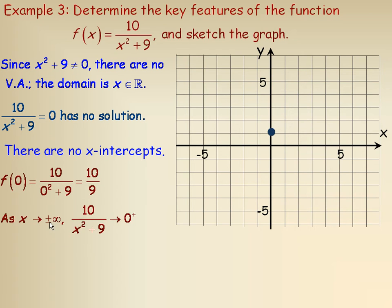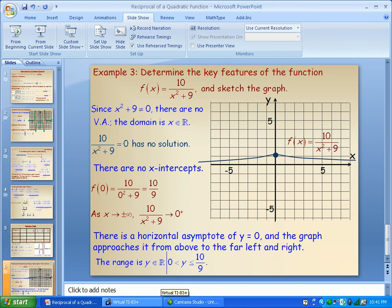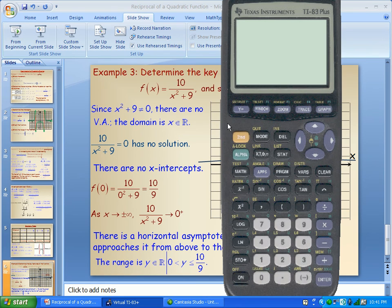Now as x approaches a large positive or a large negative, the value of 10 over x squared plus 9 tends towards zero from the positive side. And just to illustrate that, bring my graphing calculator up here again.